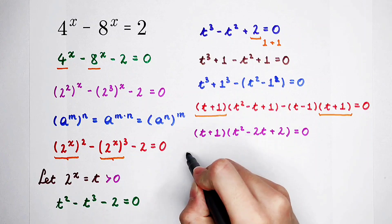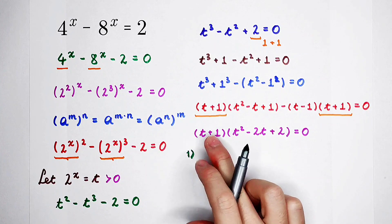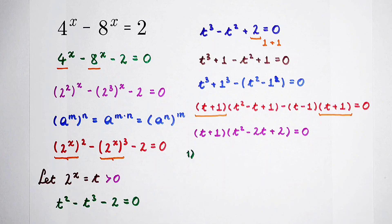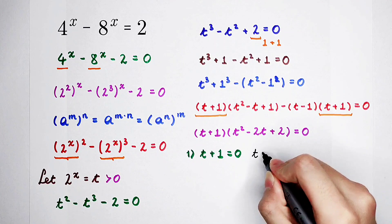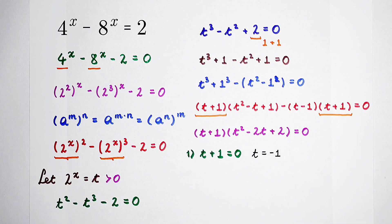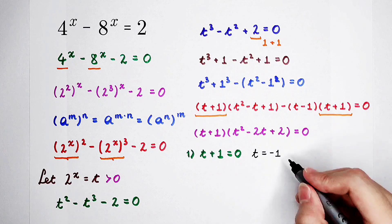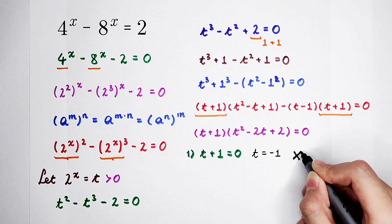So now there are two cases. The first case is when t + 1 = 0, which gives t = −1. But we know that t must be greater than 0 — it must be positive. So in this case, there are no solutions.